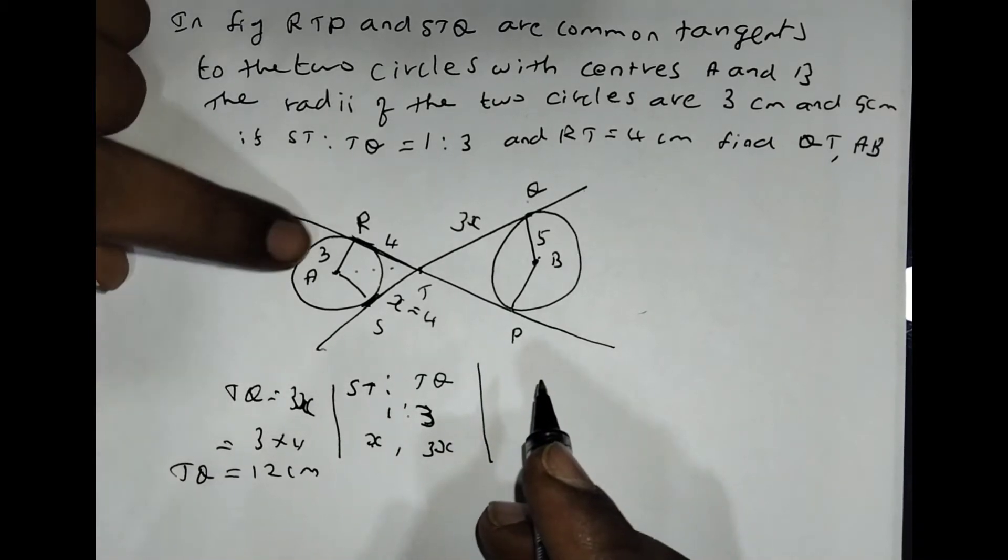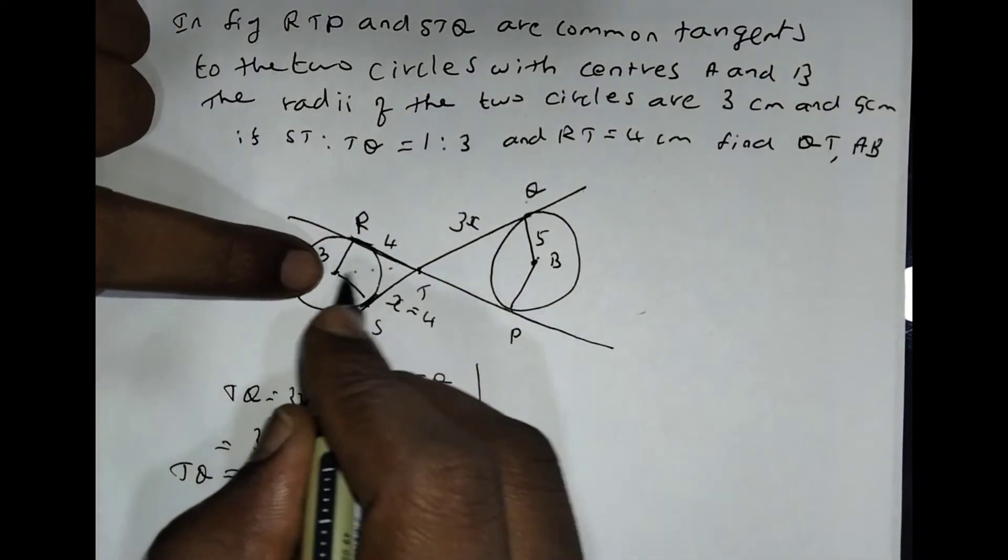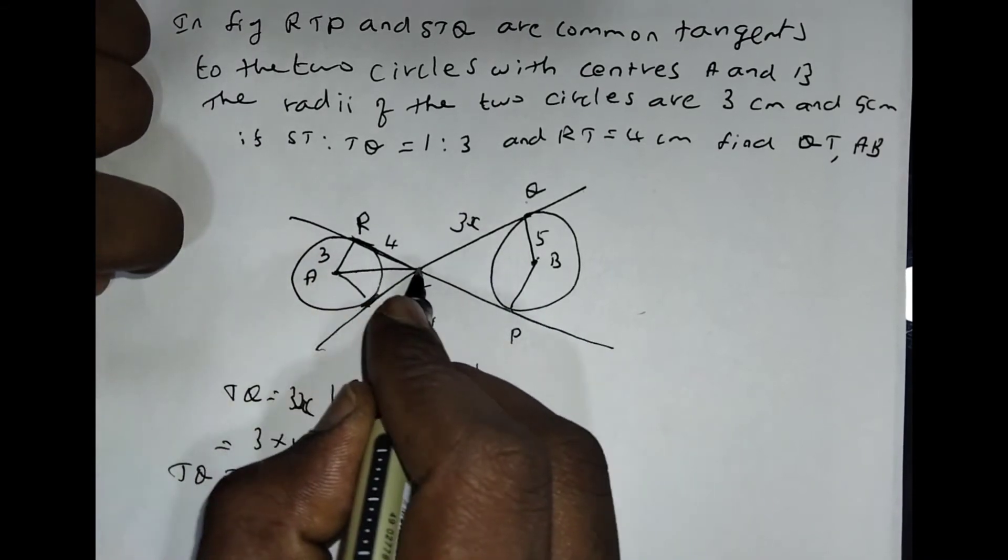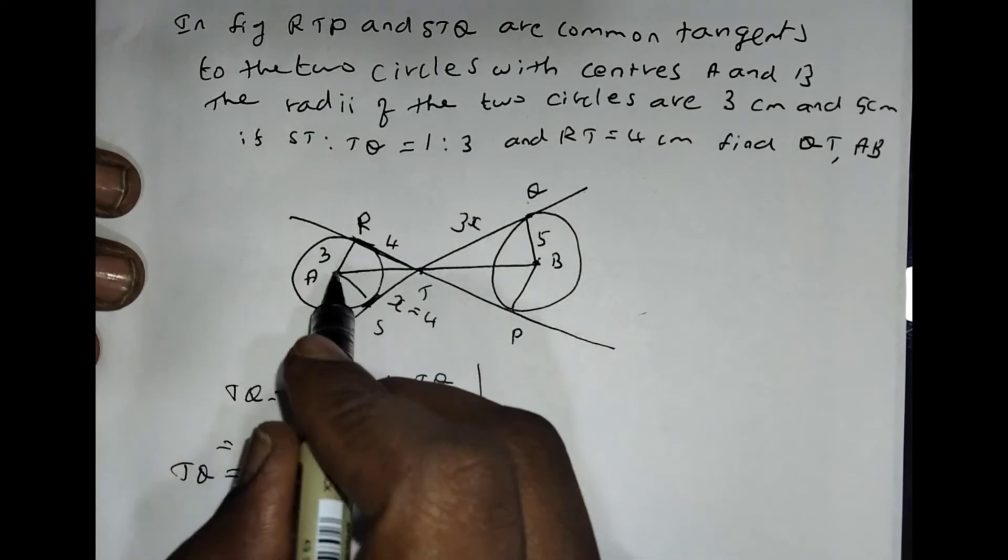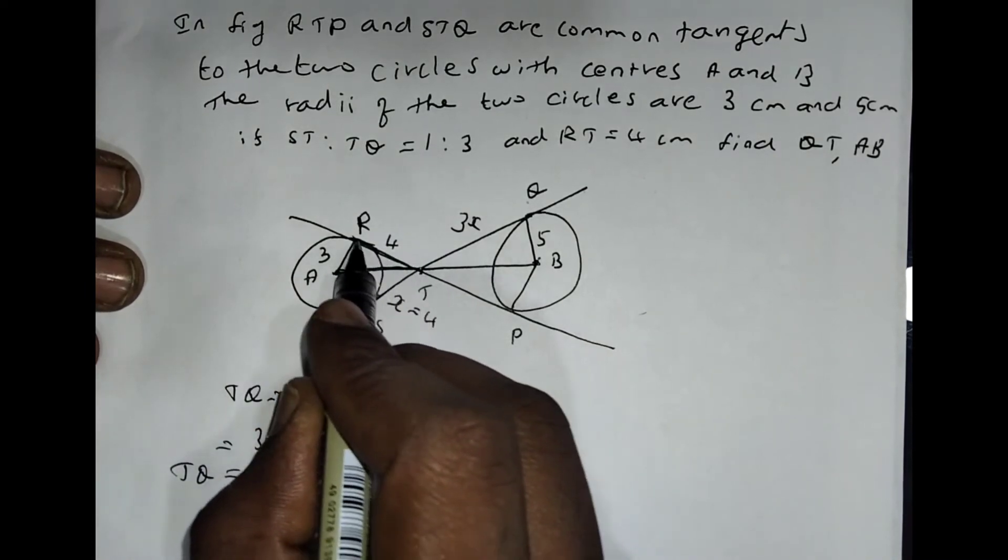Then you want to find the length of AB. Find AD and DB. You can add total length and AB will come. So when you come to AD, use the triangle Pythagorean theorem.